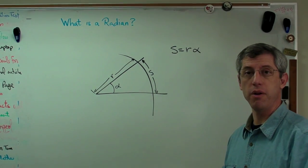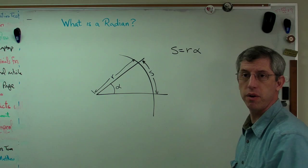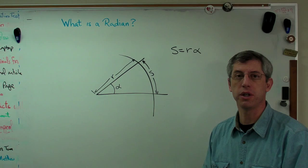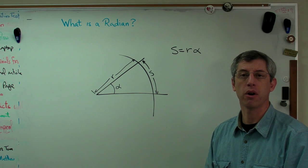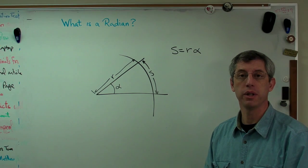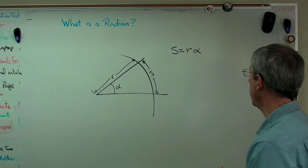s equals r times alpha. Okay, this comes out of basic calculus. If you want to develop this expression, you can calculate arc length. It's easy to do in polar coordinates. You can also do it in Cartesian coordinates if you like.